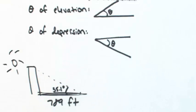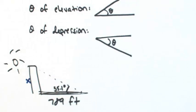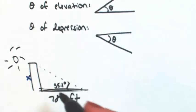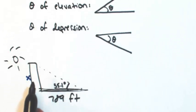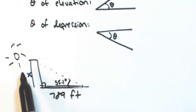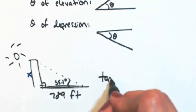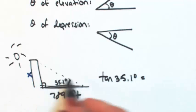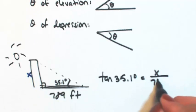So we want to find the height of the monument. So let me call that x. So using the fact that hopefully the monument and the ground is perpendicular, we have a right triangle. So let's figure out which trig function will relate the opposite with the adjacent. That's our tangent. So the tangent of 35.1 degrees is opposite over adjacent.